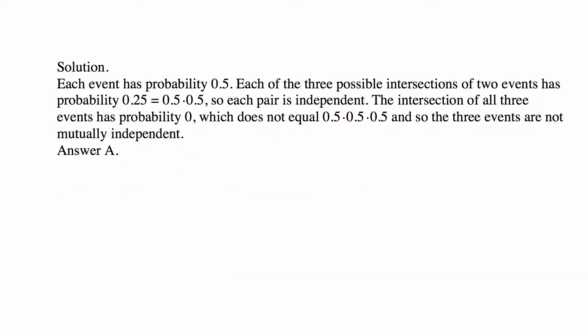Well, odd and even — two equally likely choices — so each event has probability 0.5. Each of the three possible intersections of two events has probability 0.25, which is 0.5 times 0.5. So each pair is independent, because independence means the probability of intersection is the product of the two probabilities.